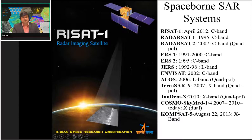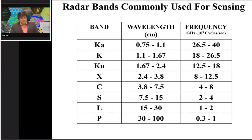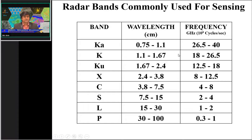Looking at different bands used in remote sensing, currently there is no imaging SAR sensor in K-band because the wavelength is very small (0.75 to 2.4 cm), and atmospheric cloud particles cause noise and interference. Most sensors operate beyond 2.4 cm. In X-band, TerraSAR-X and TanDEM-X operate at 3 cm mean wavelength, with total range of 2.4 to 3.8 cm.